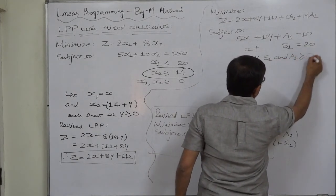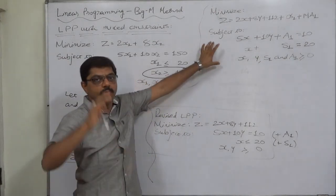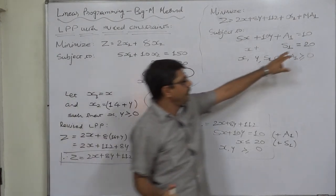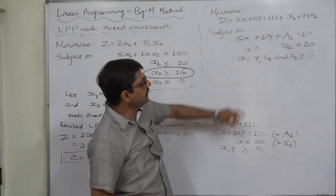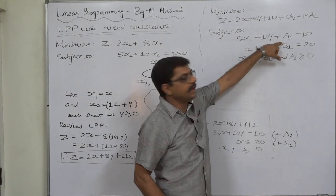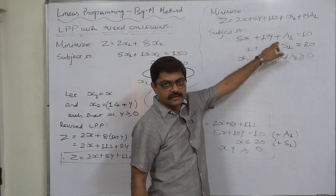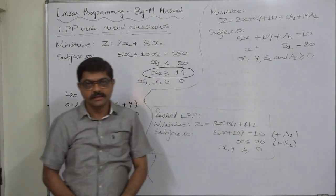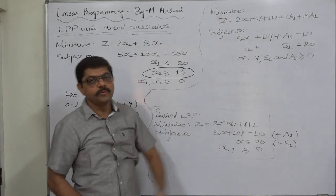All variables are non-negative. We now have the revised LPP in equality form and can solve it using the Big M method, since we introduced an artificial variable in the first constraint. In the next lecture, we will prepare the first simplex table and obtain the initial solution.